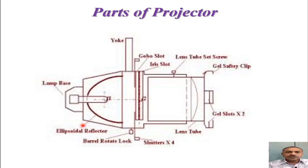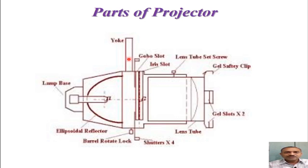The basic parts of the projector include: a lamp base that houses the lamp, and a reflector that reflects the light emitted by the lamp. The light coming out of the reflector can be adjusted using shutters, which help produce the required beam angle. The whole projector is installed on a wall or polar tower using a yoke, and can be moved mechanically with the help of a rotating lock.